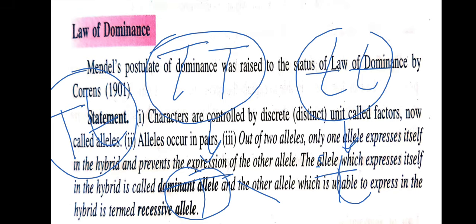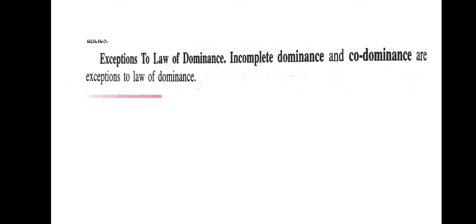There are exceptions to the law of dominance: incomplete dominance and codominance. Incomplete dominance is the phenomenon where none of the two alleles of a gene is dominant over the other, so that when both are present together, a new phenotype is formed which is intermediate between the independent expression of the two alleles. Once they are crossed, a new phenotype is formed which is intermediate between the two parents.